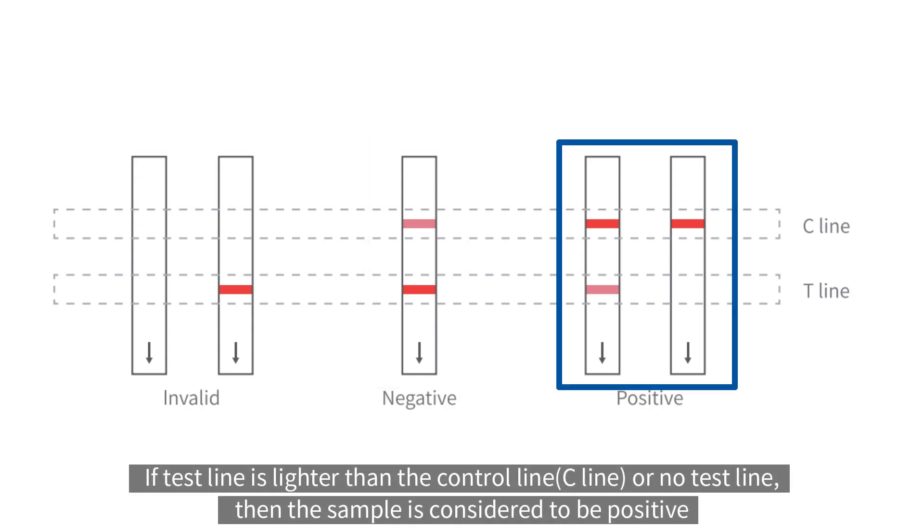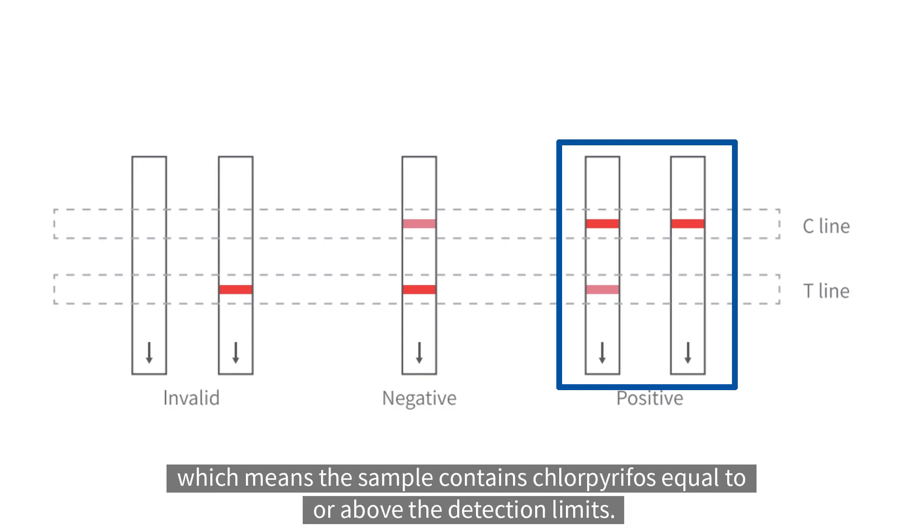If test line is lighter than the control line or no test line, then the sample is considered to be positive which means the sample contains chlorpyrifos equal to or above the detection limits.